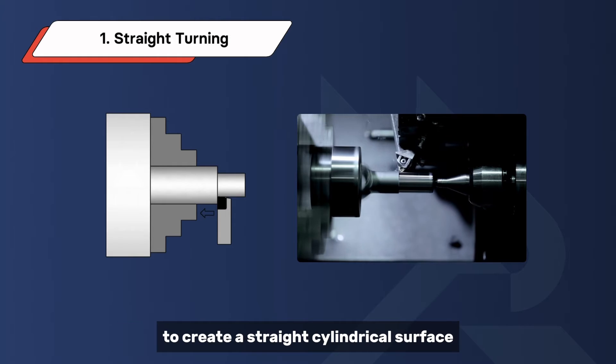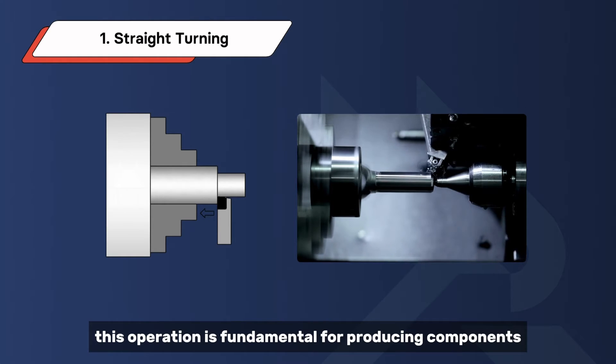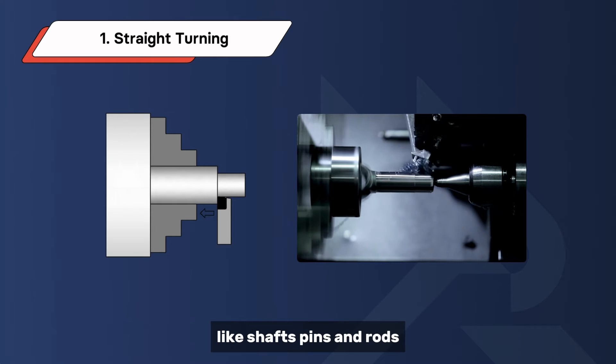It involves cutting along the length of a workpiece to create a straight cylindrical surface. This operation is fundamental for producing components like shafts, pins, and rods where a uniform diameter is crucial.